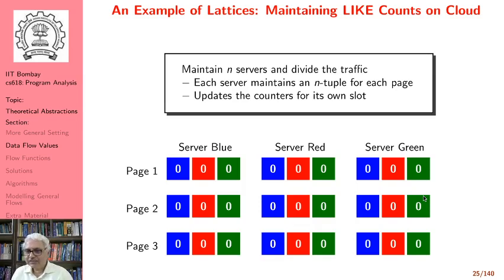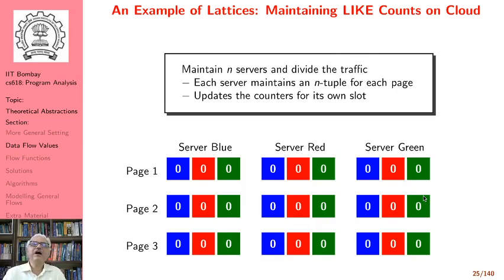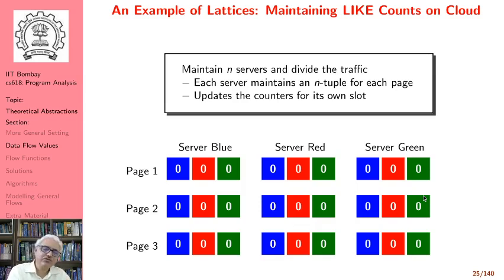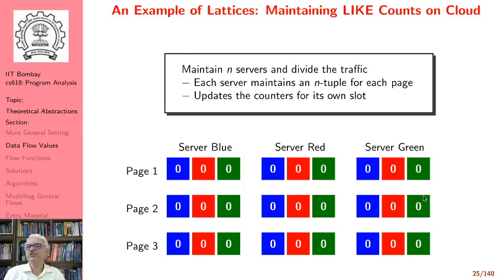Here is an example of a lattice application. Consider a distributed system like Facebook where you maintain the count of likes a page has received. Since likes can come from anywhere in the world, we do not want to maintain everything on a single server — if that server goes down, everything goes down. Instead, we divide traffic between n servers, and each server maintains an n-tuple of counts for each page, so there is redundancy: every server has count information maintained by every other server.